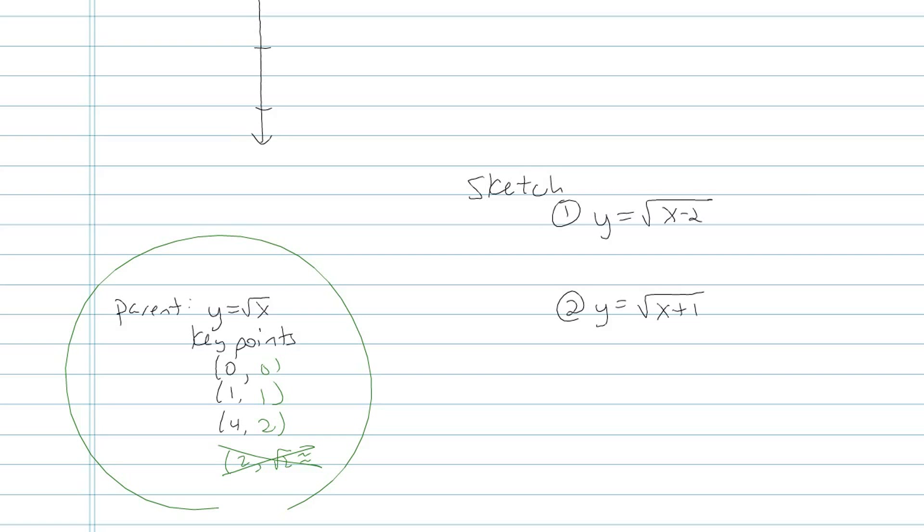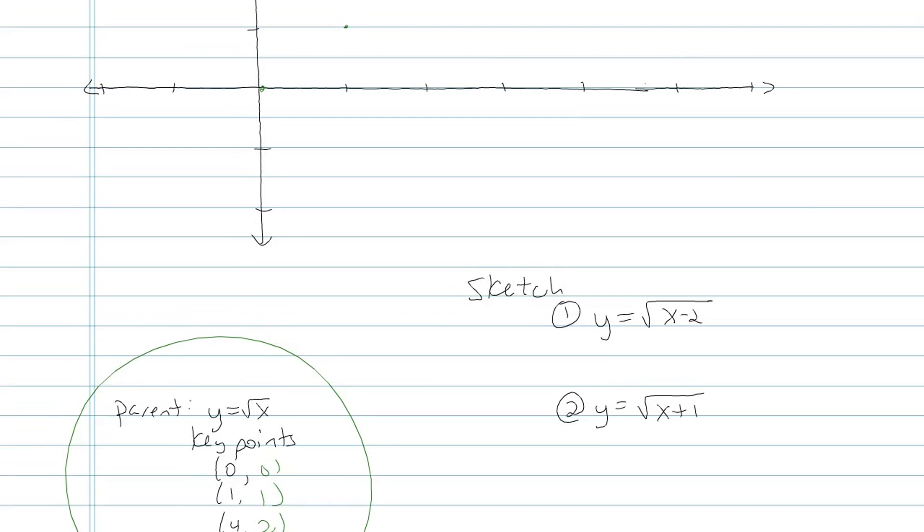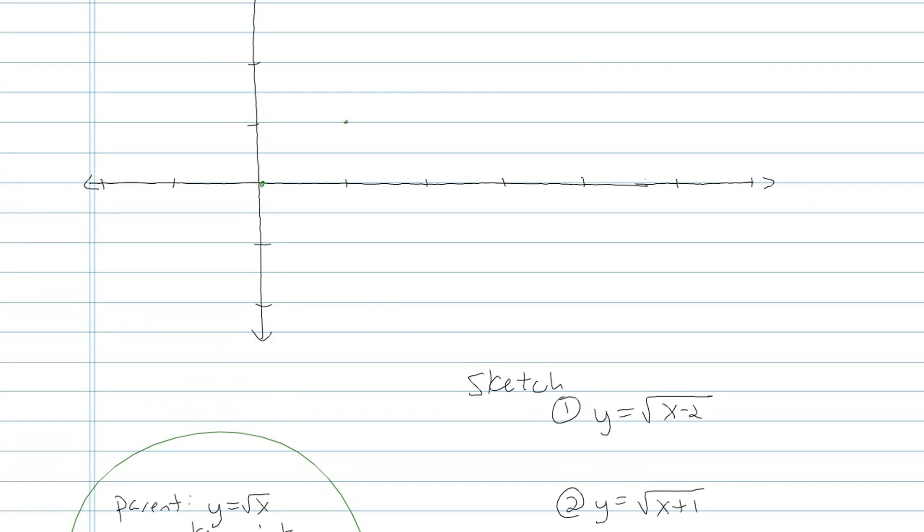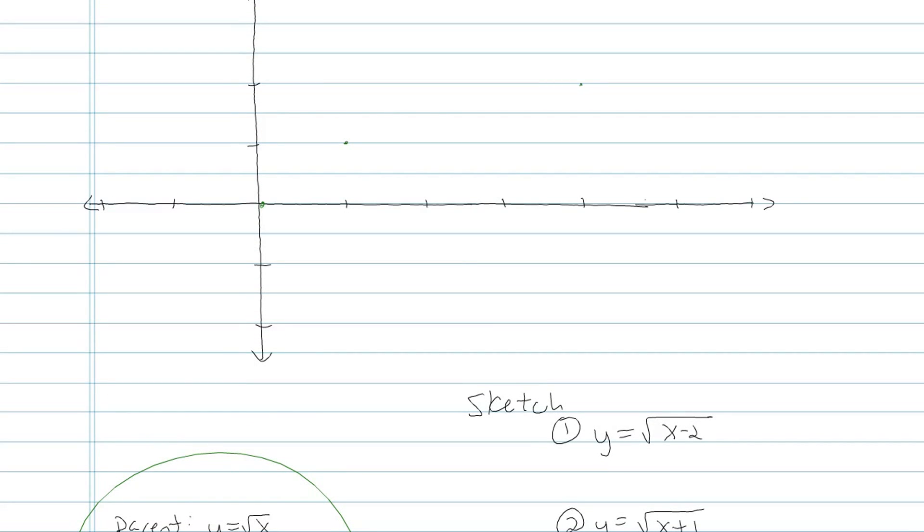I'm going to put them on my graph now. Also notice on my graph here I've skipped by 2's. I made this graph kind of blown up so you can see it a little better. Here's my parent graph. I'm going to draw it dashed, and this is the graph of y equals square root of x.